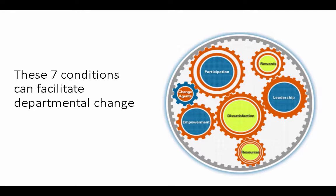Social science research has identified seven conditions that facilitate departmental change. Don't be alarmed by the different sizes of these cogs in this system — I don't think the size is really significant. First I'll talk about dissatisfaction with the status quo. To motivate action you can call attention to the problem, and in that way you'll have a chance to communicate an appealing vision of a better future. And then empowerment — consider the obstacles that could get in your way and how they can be overcome, then figure out ways to get folks to agree and feel empowered in doing so.